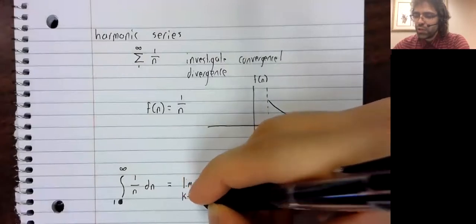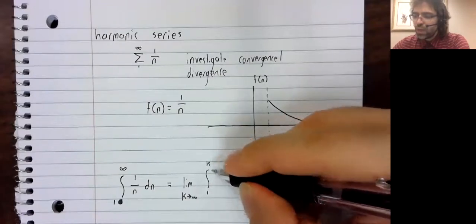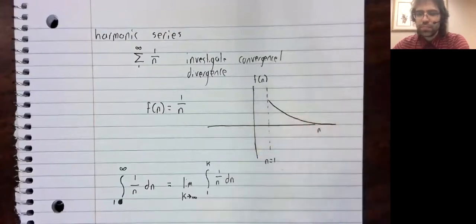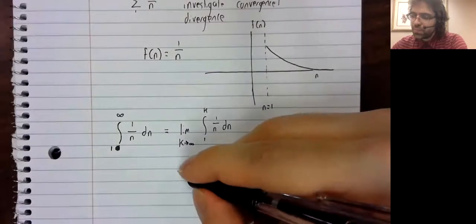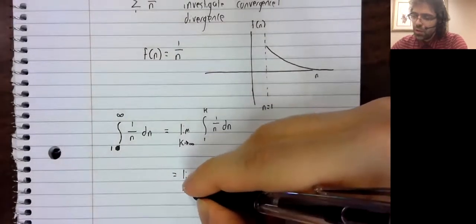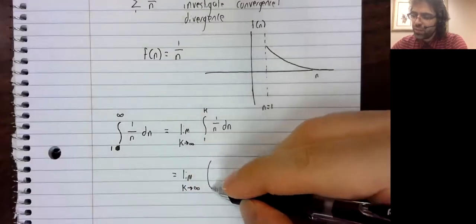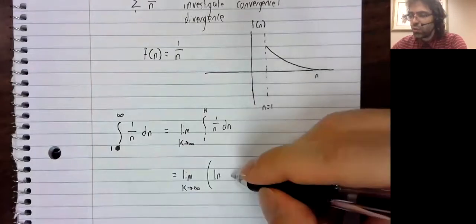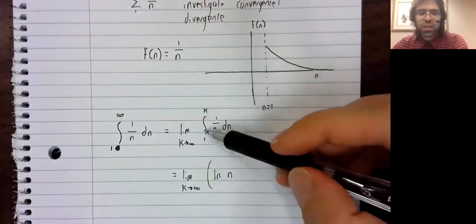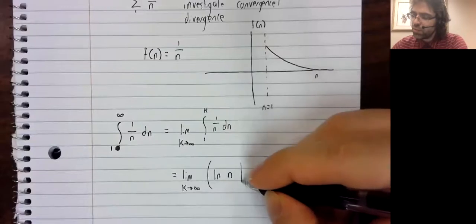We rewrite our improper integral as a limit. We take the antiderivative, which is the natural logarithm. Everything is positive on this interval, so no need for an absolute value.